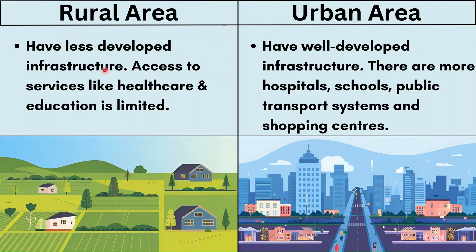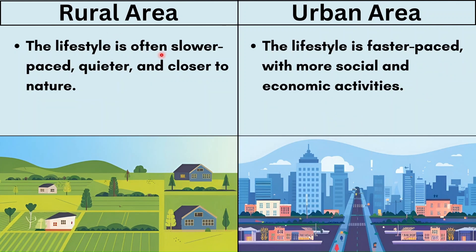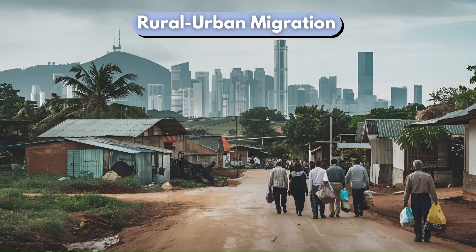Rural areas have less developed infrastructure and access to services like healthcare and education is limited — rural areas won't have state-of-the-art schools and hospitals. In an urban area we have well-developed infrastructure with more hospitals, schools, public transport systems and shopping centers. In a rural area the lifestyle is often slower-paced, quieter and closer to nature, while in an urban area the lifestyle is fast-paced with more social and economic activities.